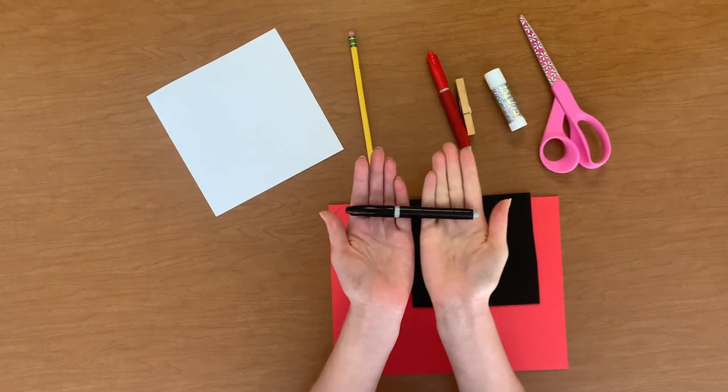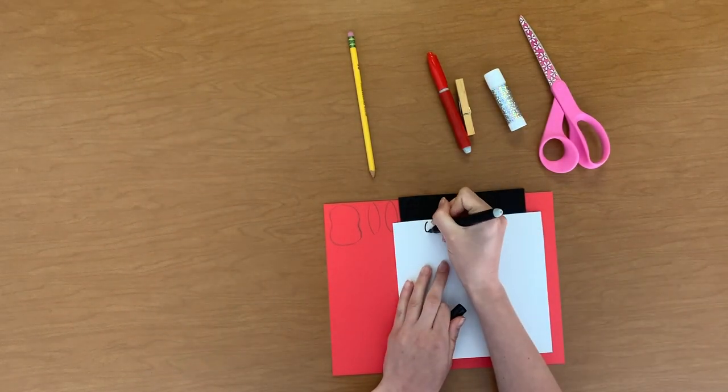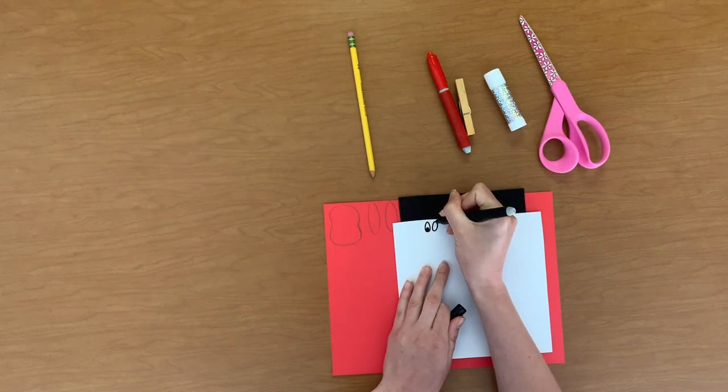Finally, use your black marker to draw Clifford's eyes on your white piece of paper, making sure to draw two small ovals with dark black circles at the bottom of each.